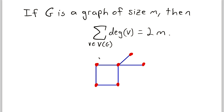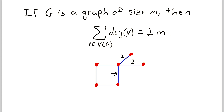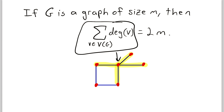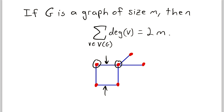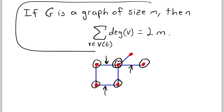So why is this theorem true? The degree of a vertex is the number of times an edge is incident with that vertex. For example, if we look at this vertex here, this edge is incident to that vertex — that's 1. This edge is incident to the vertex — that's 2. This edge here is incident to the vertex — that's 3. And then this edge here — that's 4. So the degree of this vertex is 4, because there are 4 edges incident to it. The sum of the degrees of all of the vertices is the total number of times that any edge is incident to any vertex. Each edge is incident to 2 vertices, so that total is going to be twice the number of edges in the graph. And that's exactly what the first theorem tells us.